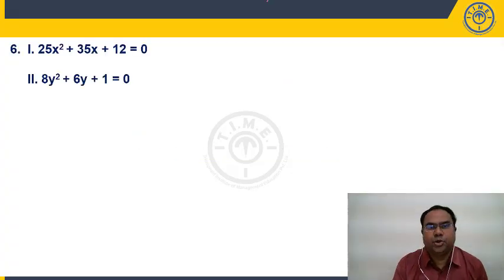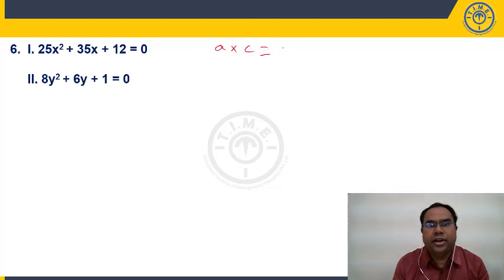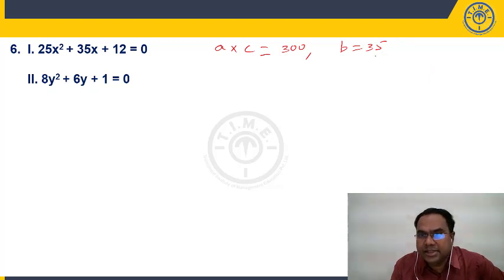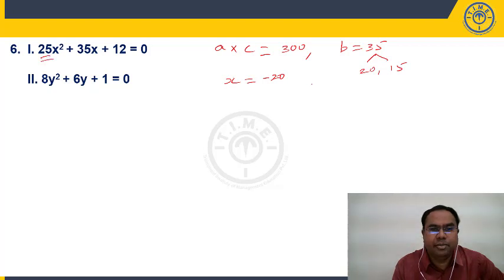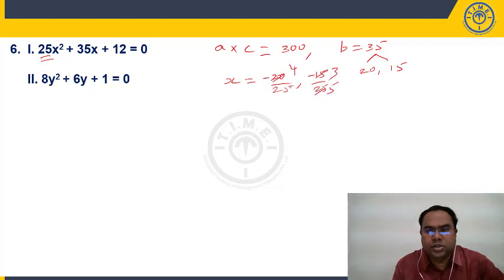Question 6: 25X² + 35X + 12 = 0. A×C = 25×12 = 300, B = 35. A×C positive, write B as sum of two numbers: 20+15=35, 20×15=300. Change signs: +20 becomes −20 divided by 25 = −4/5. +15 becomes −15 divided by 25 = −3/5. Roots of X: −4/5, −3/5.